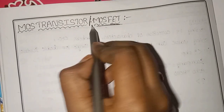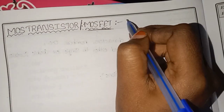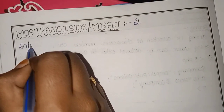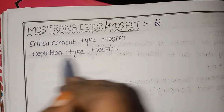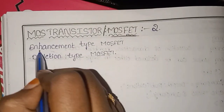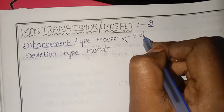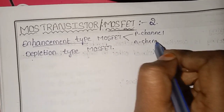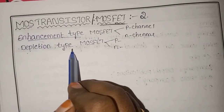MOSFET is divided into two types: enhancement type and depletion mode MOSFET. Enhancement type MOSFET is divided into two types: P-channel and N-channel. Similarly, depletion type is also two types: P-channel and N-channel.